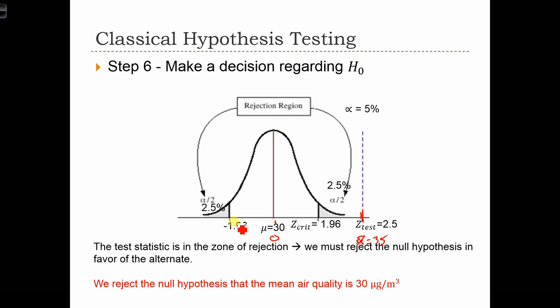Is it within the zone of acceptance? Of course not. It's way out here in the right tail, past the critical value of 1.96. And therefore, we must reject the null hypothesis in favor of the alternate.